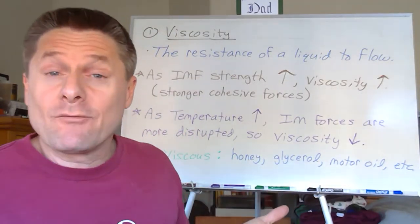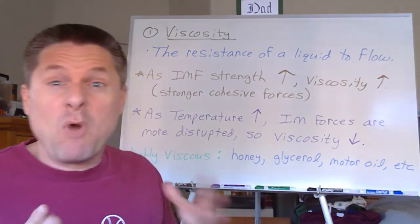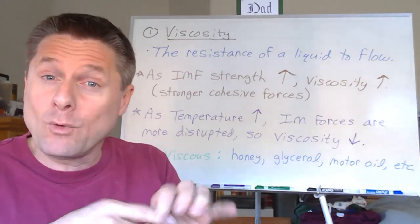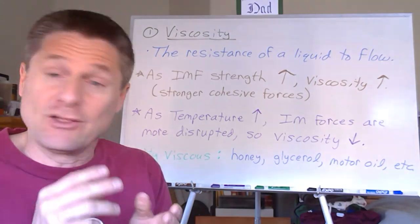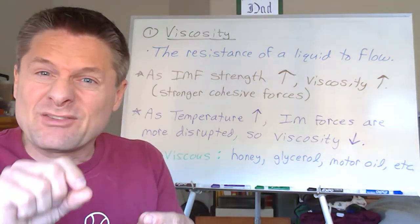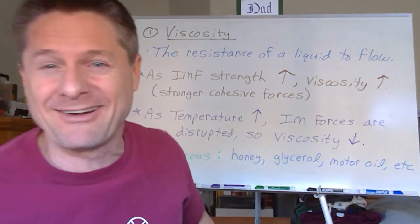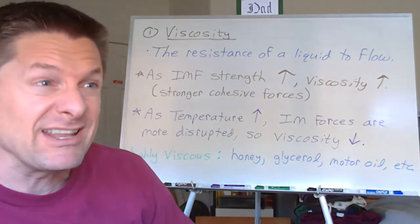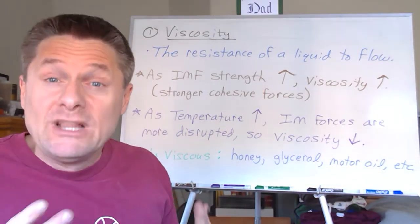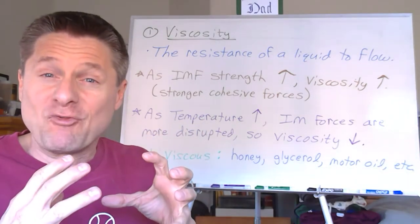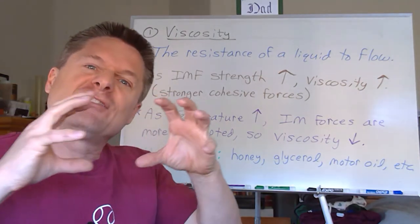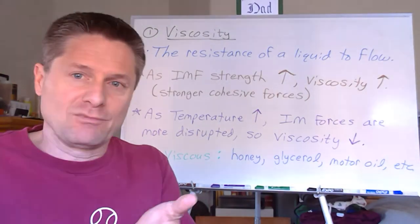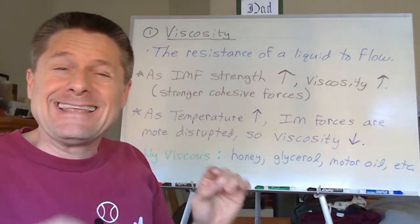Viscosity — what do you think of when somebody says viscous? Think honey, motor oil. In lab, glycerol is used to lubricate rubber stoppers where we insert thermometers or glass tubing — it flows really slowly. Glycerol is three carbons each with an alcohol (–OH) group, so it has triple hydrogen bonding and super strong intermolecular forces. Liquids with really strong intermolecular forces have strong cohesive forces — they get sticky and don't flow over a surface readily, unlike ones with weaker intermolecular forces like ethanol.